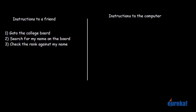Now the same instructions will not work with the computer. Going to the college board is fine, but the problem is with the second step. When we say 'search for my name,' the term search does not make any sense to a computer — he does not know what search means. It's like a three-year-old kid who doesn't understand the term search. If you just tell him to go search for your name, he may just randomly stare at the board and come back. So the second step needs to be broken down into smaller steps to explain how to actually search for the name on the board.